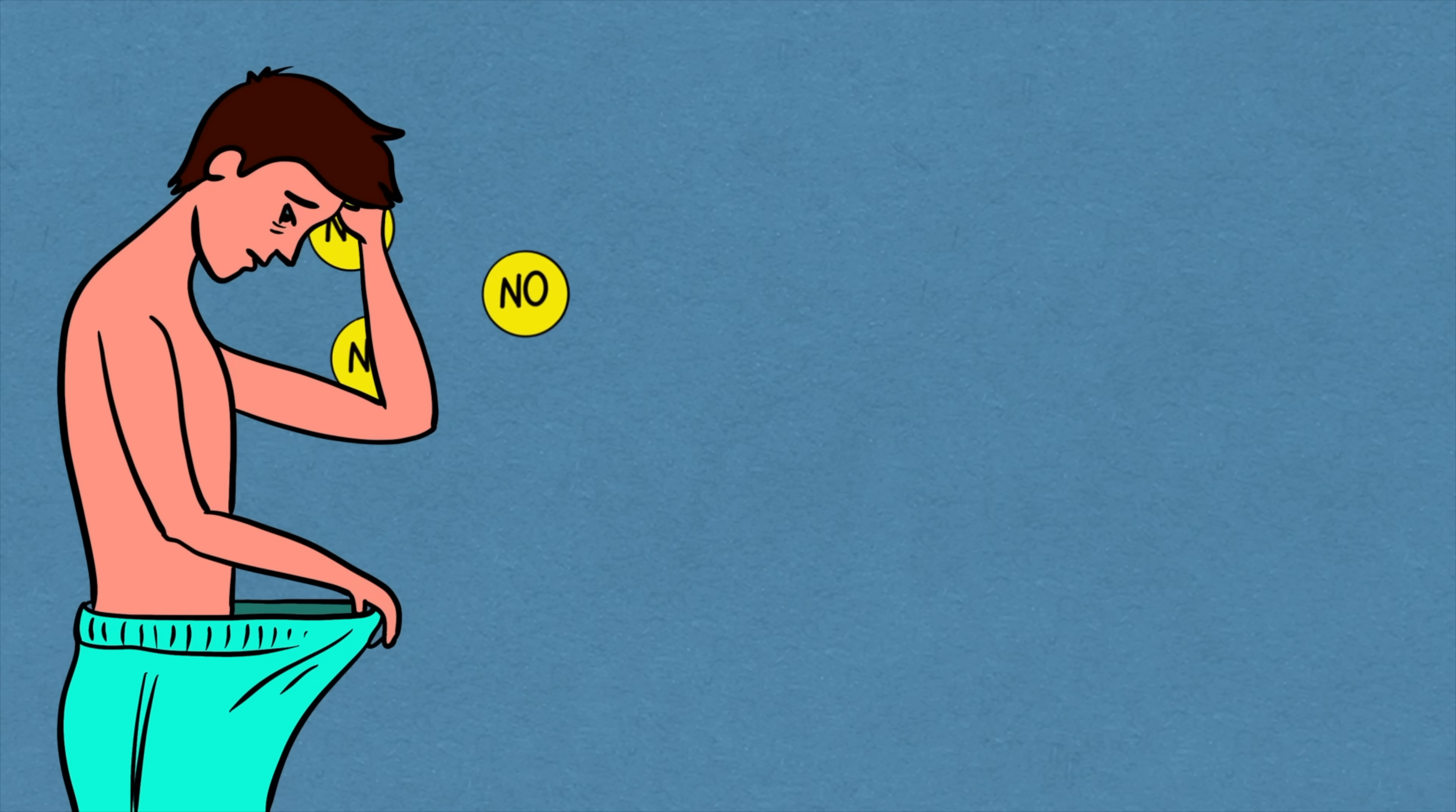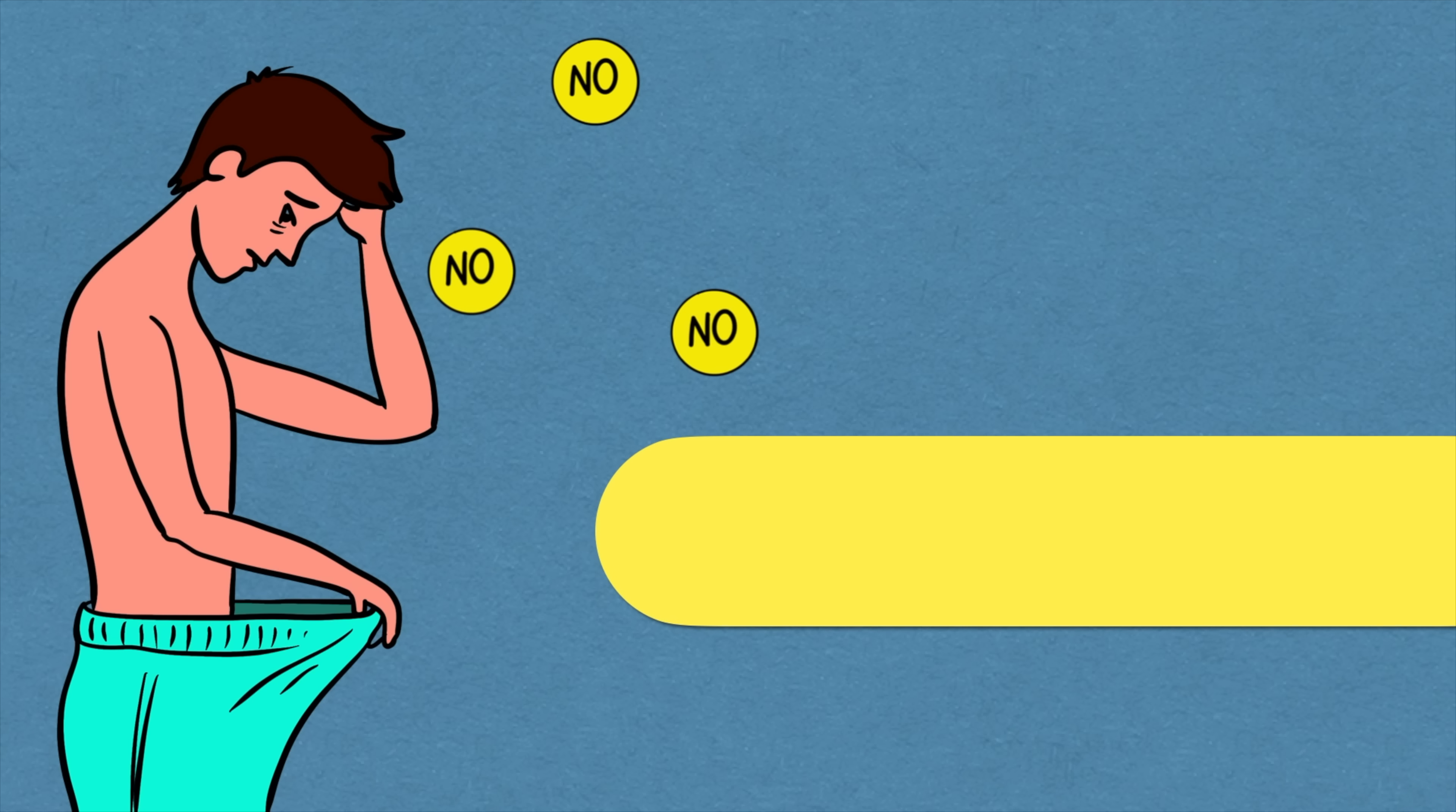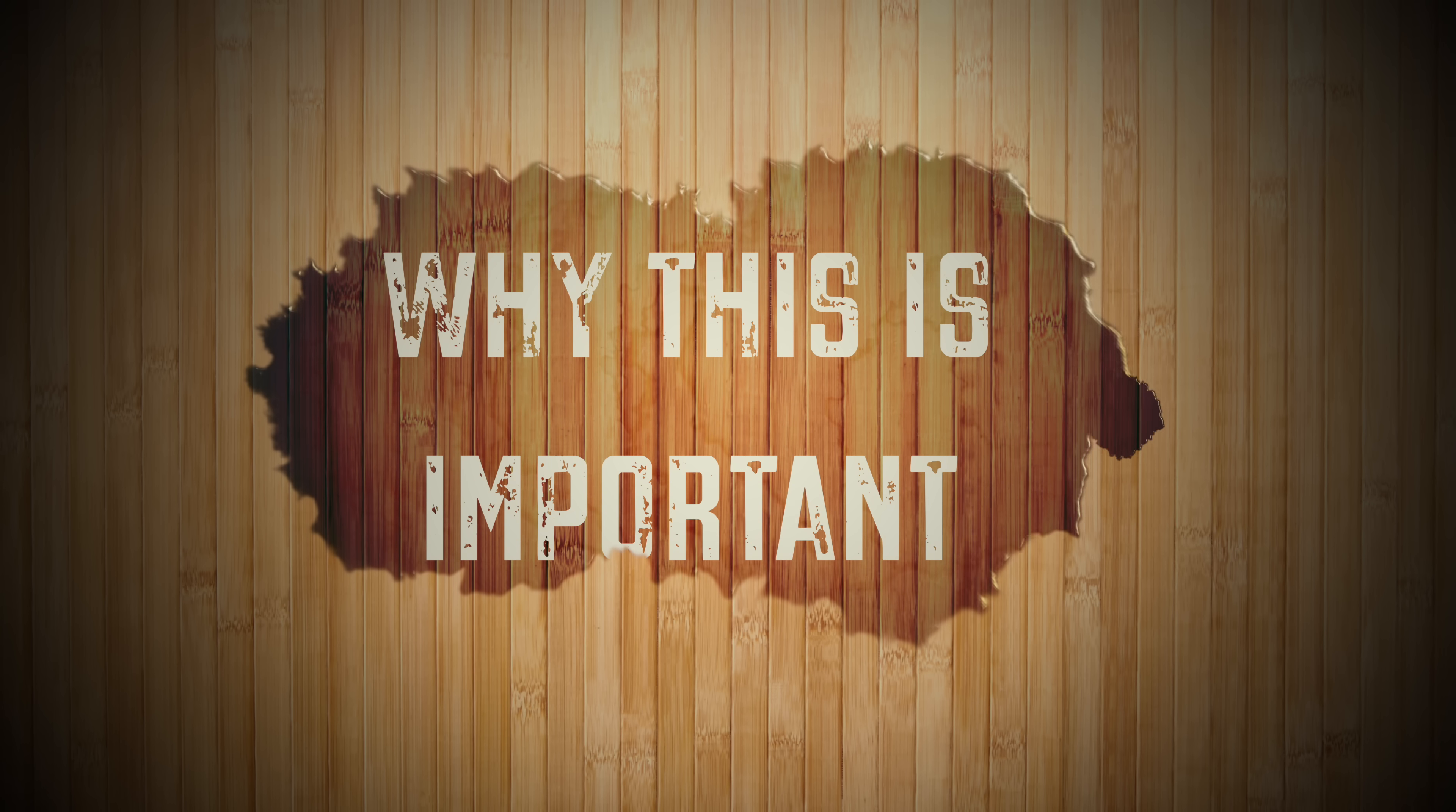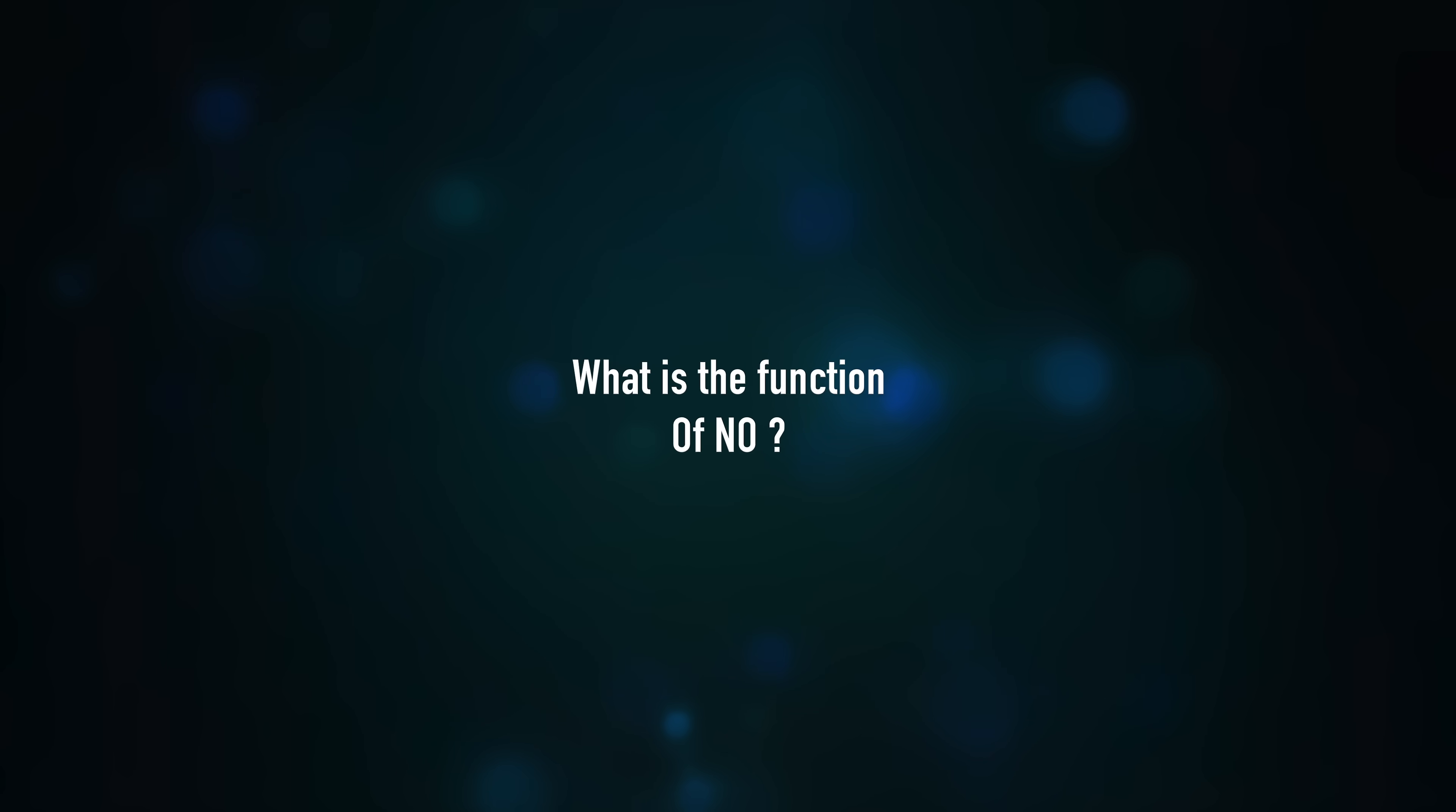To cherish this idea we have to understand the mechanism of erection first. One of the most important molecules involved in erectile dysfunction is nitric oxide. Most of the ED medicines use the nitric oxide pathway. So why is this important? What is the function of nitric oxide in our body?